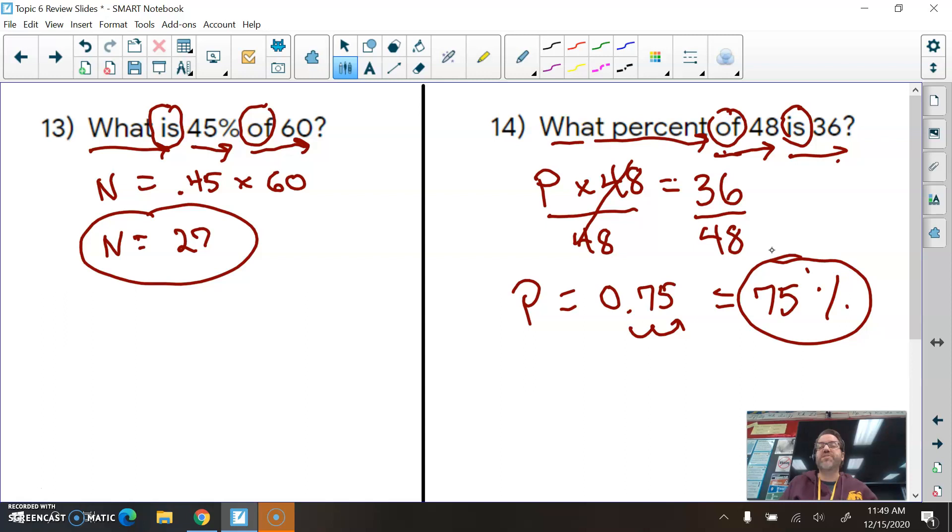Just a little side note. When we had 36 out of 48 here, because 48 is the whole amount, 36 is the part. 36 out of 48, if you were to simplify that ratio, that's three-fourths. And guess what? Three-fourths, you probably know, is 75%, right? So it makes sense, doesn't it, that it would be 75%.